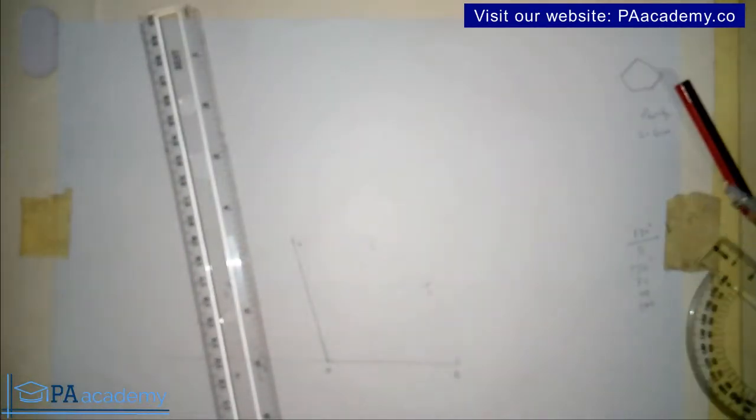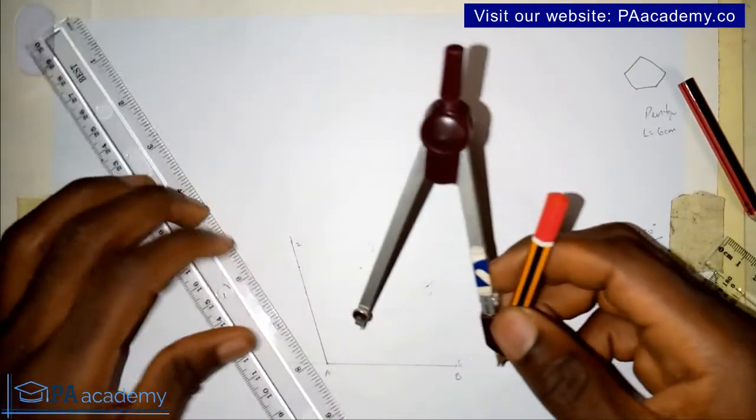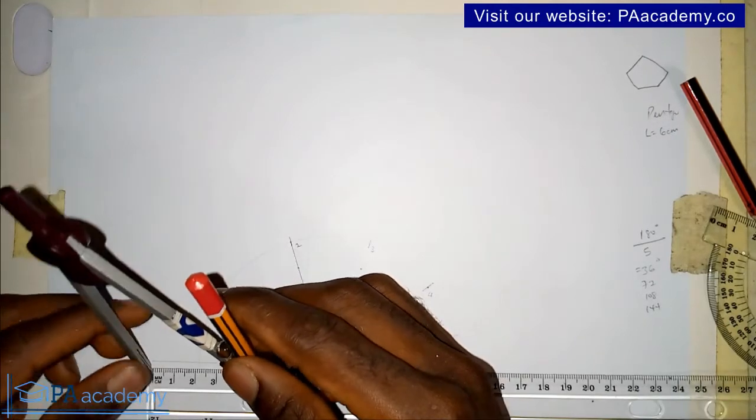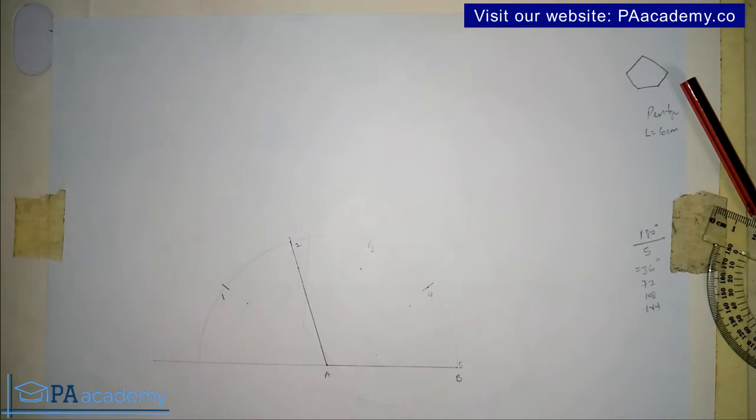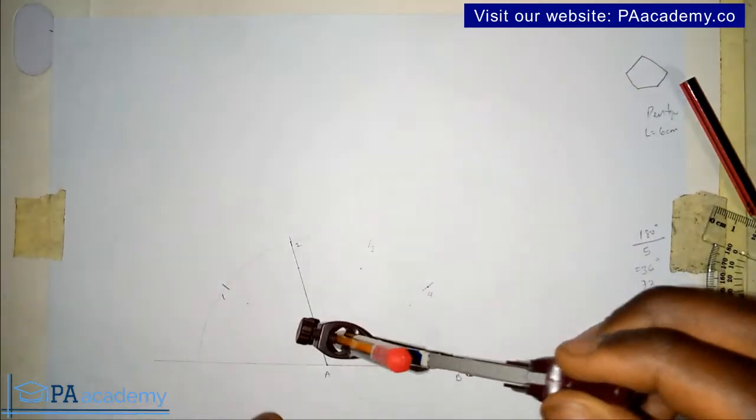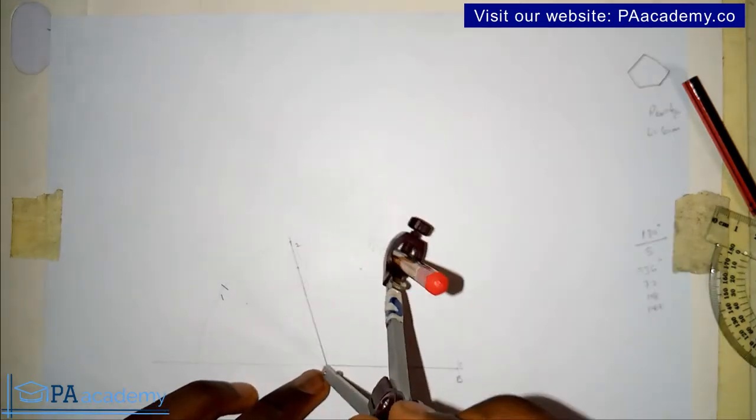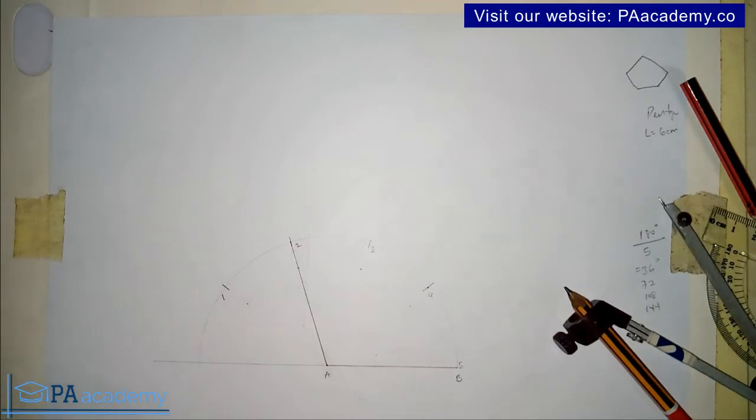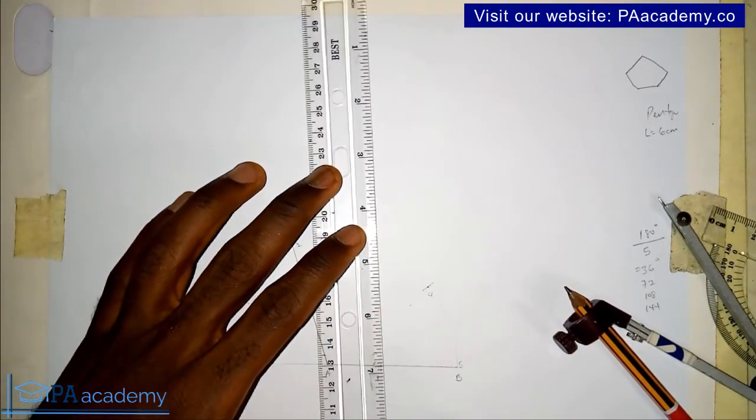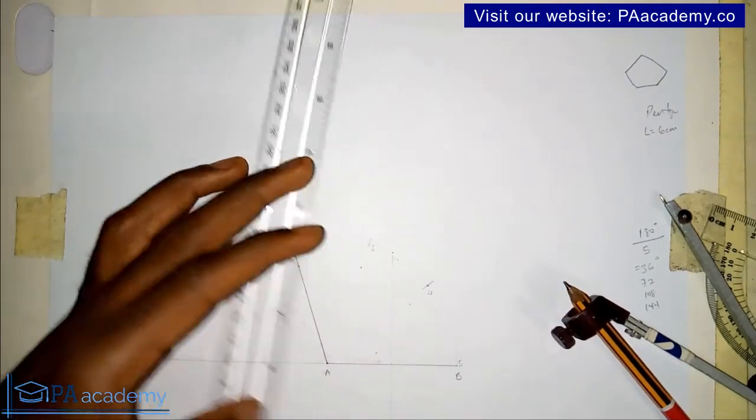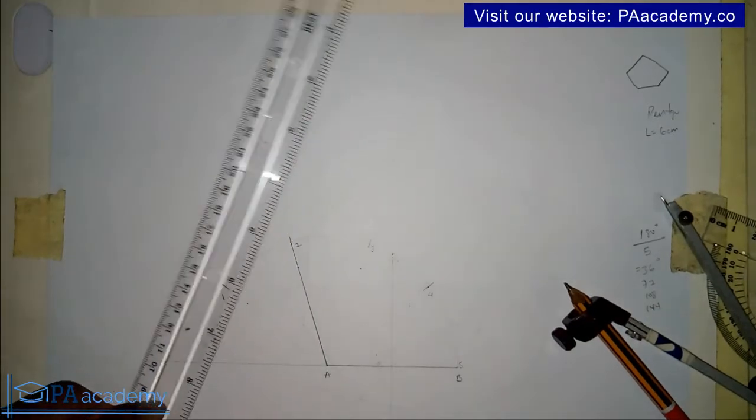Once you have done that, the next thing is to bisect line AB and line A2. So line AB is still six centimeters. Let me just check if my compass is still on six centimeters. So I've just bisected line AB. I'm also going to bisect line A2.